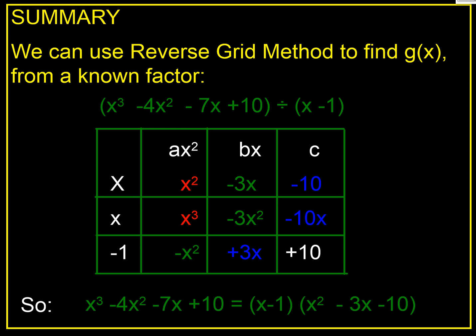So let's just summarise where we are. We can use the reverse grid method here, as we did, to effectively take our cubic and divide it by our linear and therefore find out what the quadratic is inside. And therefore, we proved that that cubic is x minus 1 times that quadratic by using the reverse grid. I hope that's of use. Thank you.